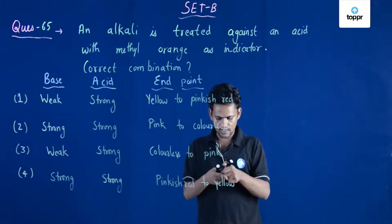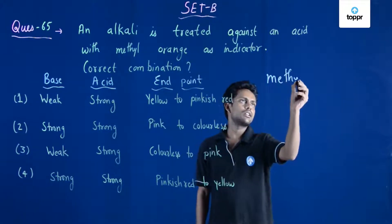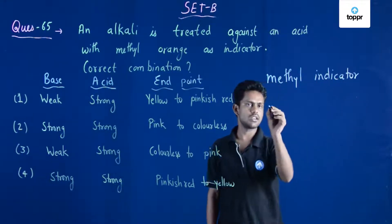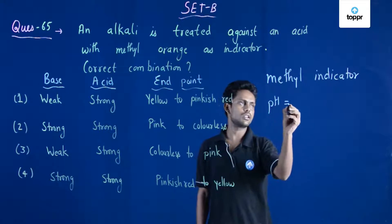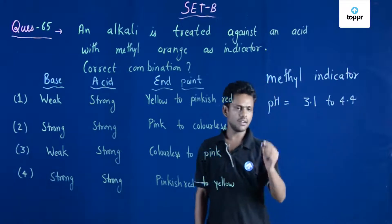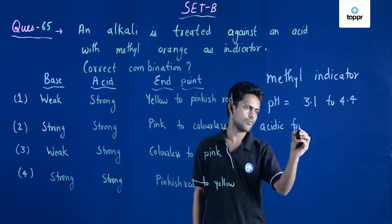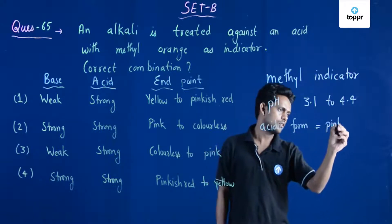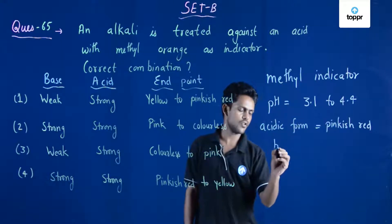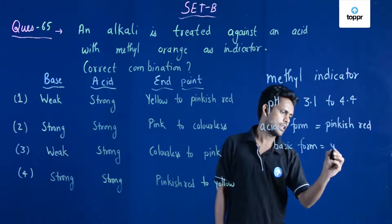Methyl orange is an indicator which shows color change in the pH range of 3.1 to 4.4. If it is in acidic form it is pinkish red, and if it is in basic form it is yellow.